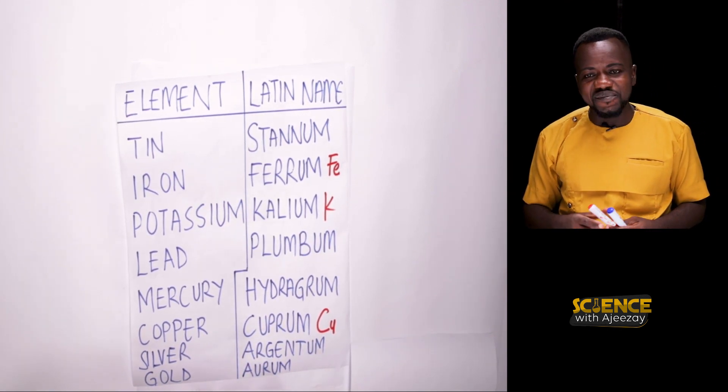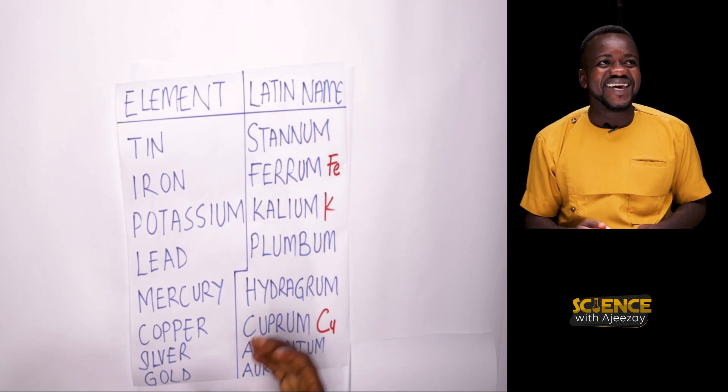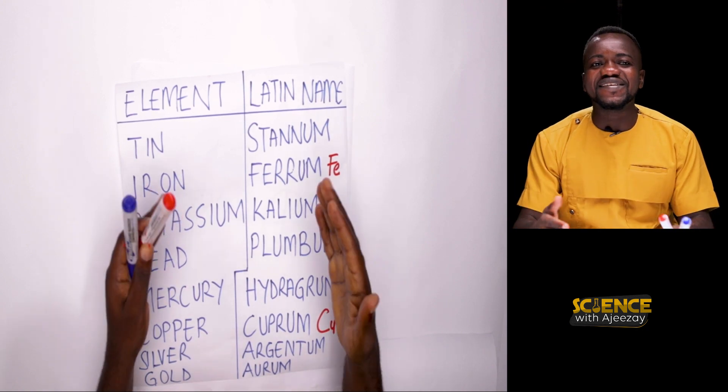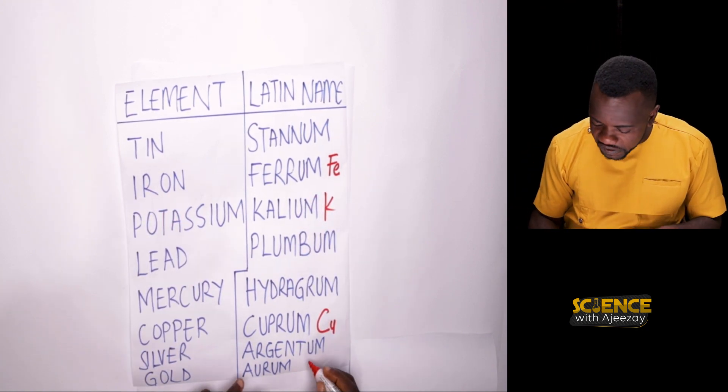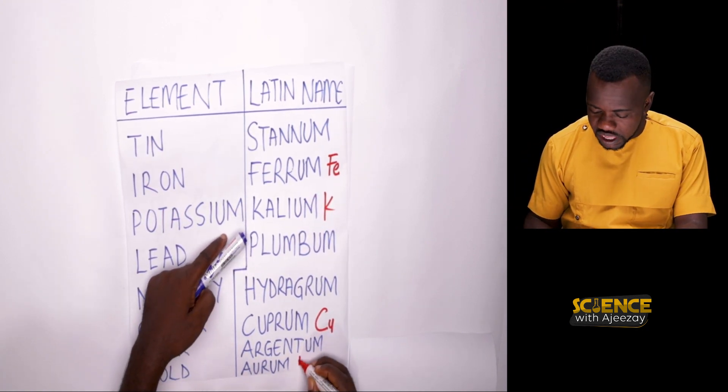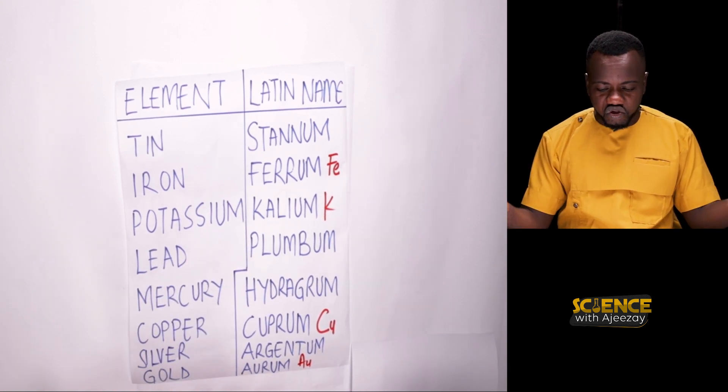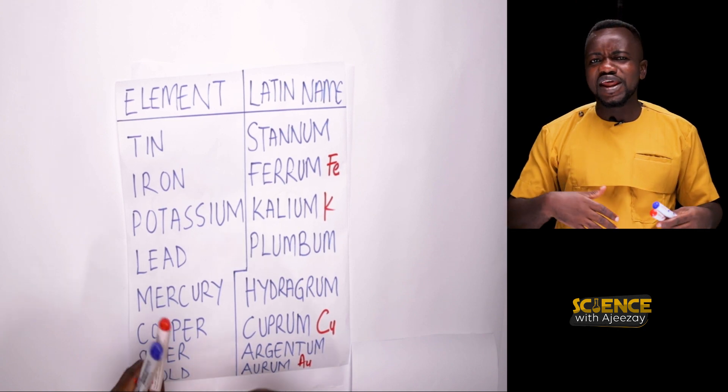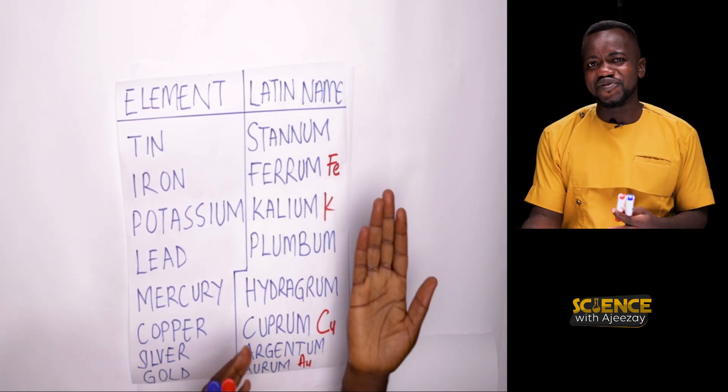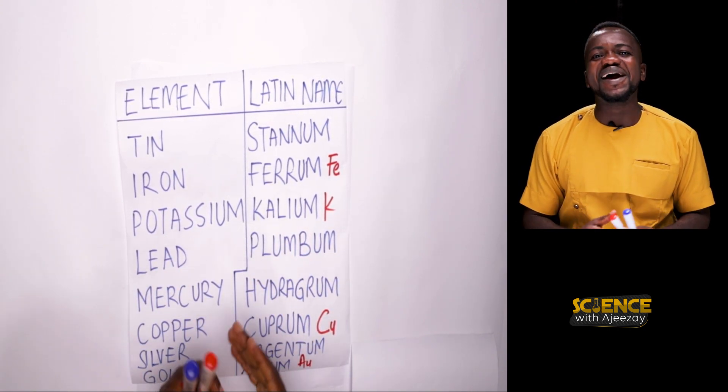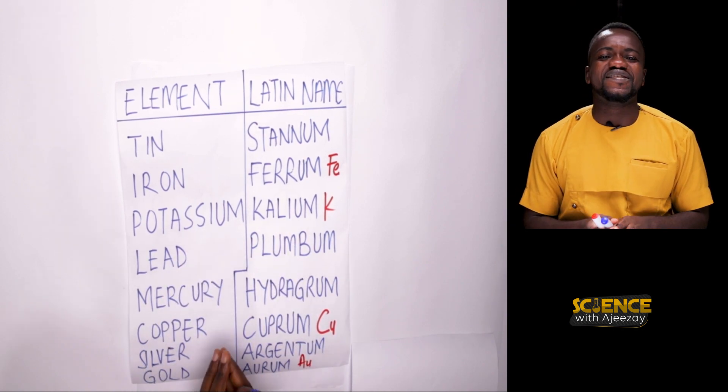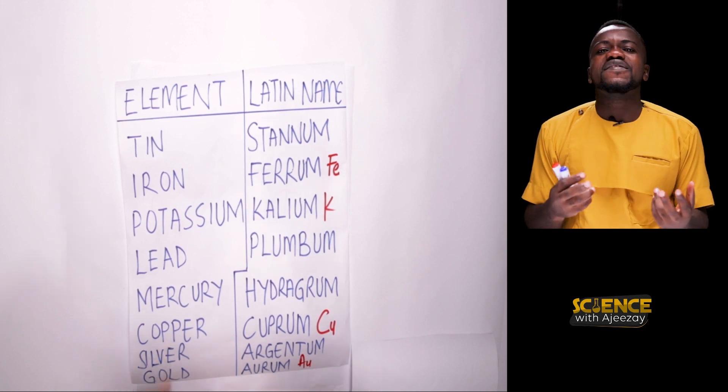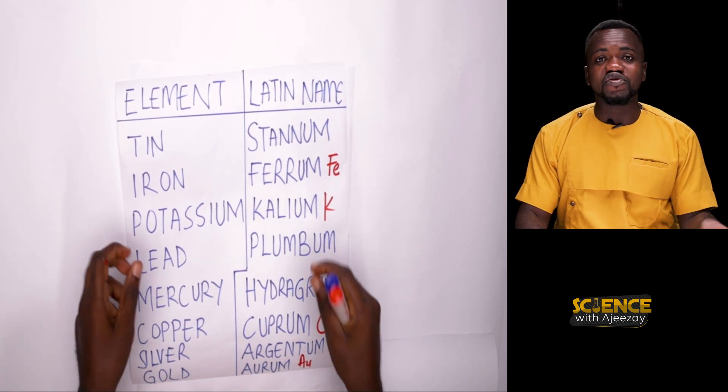It goes on and on. Gold should have been GO. But no, gold was named after its Latin name as Aurum. So the chemical symbol for gold is Au. It goes on and on. Then sodium should have been SO. But sodium was named after the Latin element as Natrium. So with this in mind, let's now go back and look at our first 20 elements.